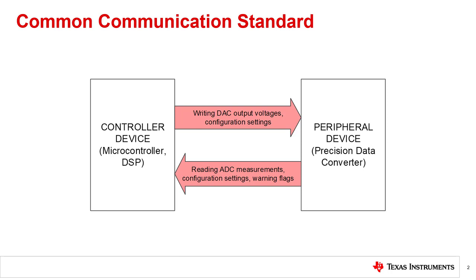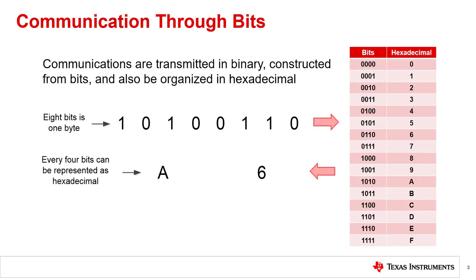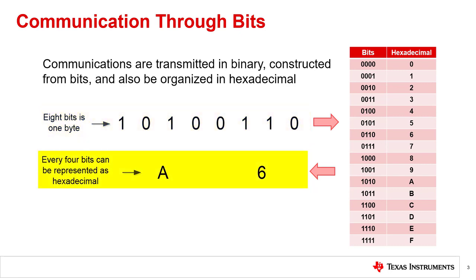For there to be communication between the two devices, a common standard is required so that both the controller and peripheral understand each other. Communications are made with transmissions of words in binary notation. These communication bits of ones and zeros are often organized in groups of eight known as a byte. For convenience, bytes can be organized into two digital hexadecimal numbers. Often several bytes are used to send data back and forth, and may represent ADC output data, DAC output voltages, or commands and configurations for the data converter.